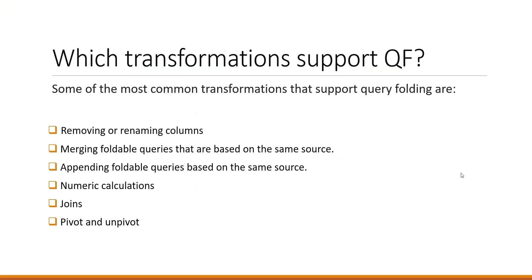Which transformations support query folding? Some of the most common transformations that support query folding are: removing or renaming columns, merging foldable queries based on the same source, appending foldable queries based on the same source, numerical calculations, joins, pivot, and unpivot. These are not the only transformations — there are others that may also support query folding.